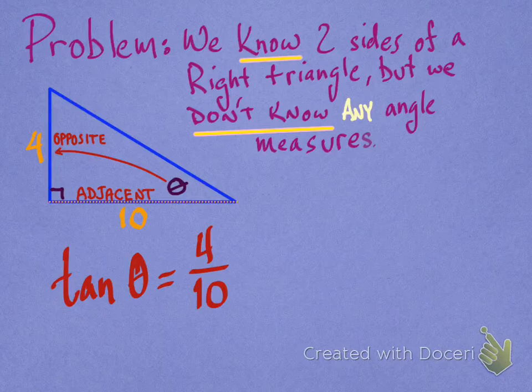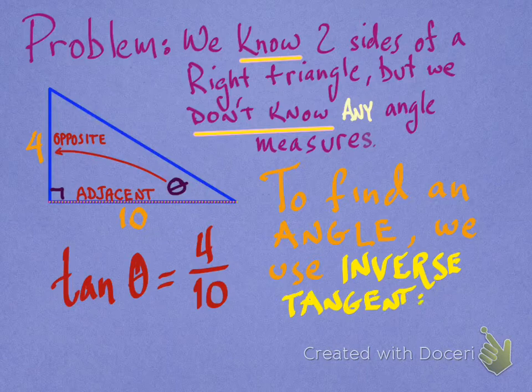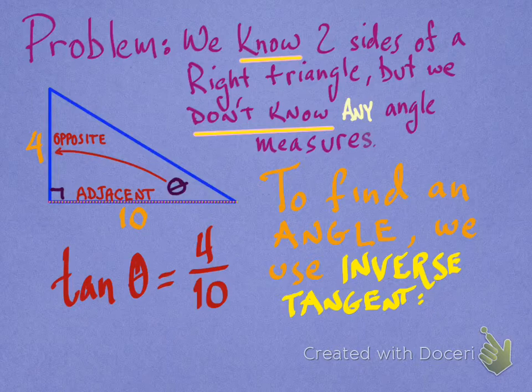Well, it turns out that to find an angle measure, we're going to use something called the inverse tangent function. In fact, you'll find an inverse function for all of your trig functions, but in this video, we're only going to talk about the inverse tangent function.